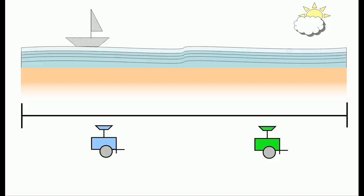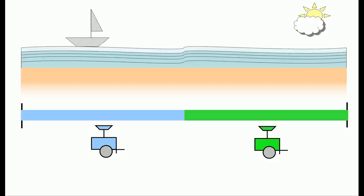If the blue and green hot dog stands spread out evenly across the beach, then the blue stand will get all the customers to the left of the middle and the green stand will get all the customers to the right of the middle.